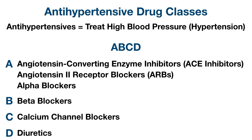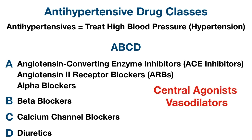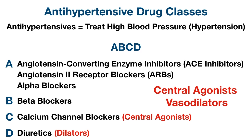While there are other antihypertensive medications out there, these are the main and generally more common ones. You might also learn about central agonists and vasodilators. You can use the C to remember central agonists and the D to remember dilators for vasodilators. So write this down and keep it in your notes.